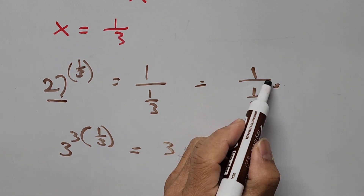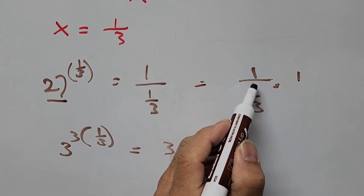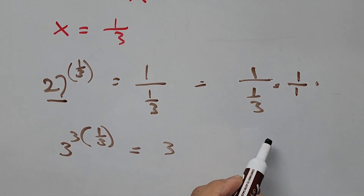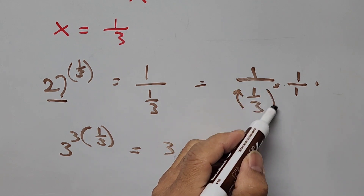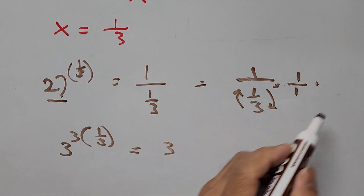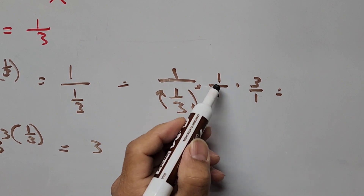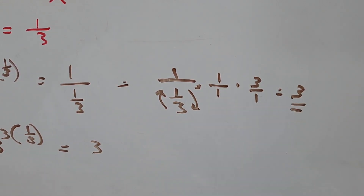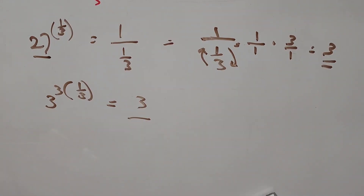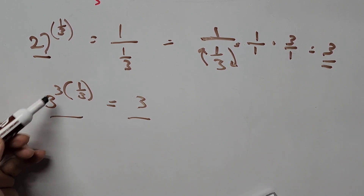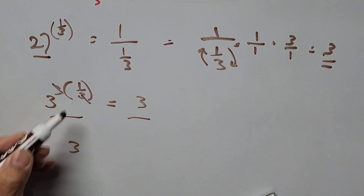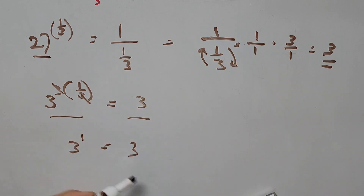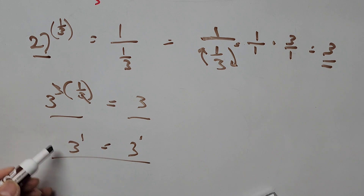Since 1 over 1 third is a division, we convert it to multiplication by taking the reciprocal of the denominator: 1 times 3 over 1, which equals 3. On the left-hand side, 3 cubed raised to 1 third means the exponents multiply: 3 times 1 third, the 3 cancels, giving 3 to the power of 1 equals 3. So 3 equals 3, confirming the value of x is 1 third.